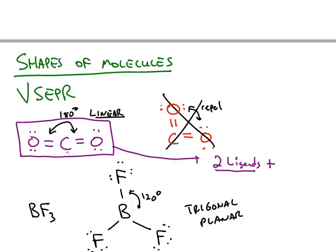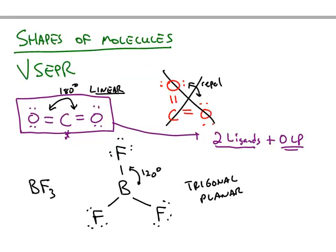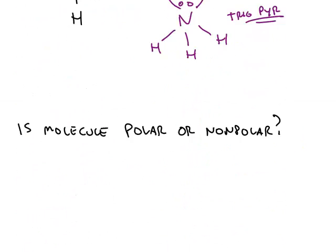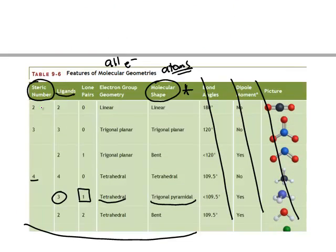And this has zero lone pairs, because we only count lone pairs on the central atom, not on the terminal atom. So if you look at table 9.6, steric number of two, two ligands, zero lone pairs,